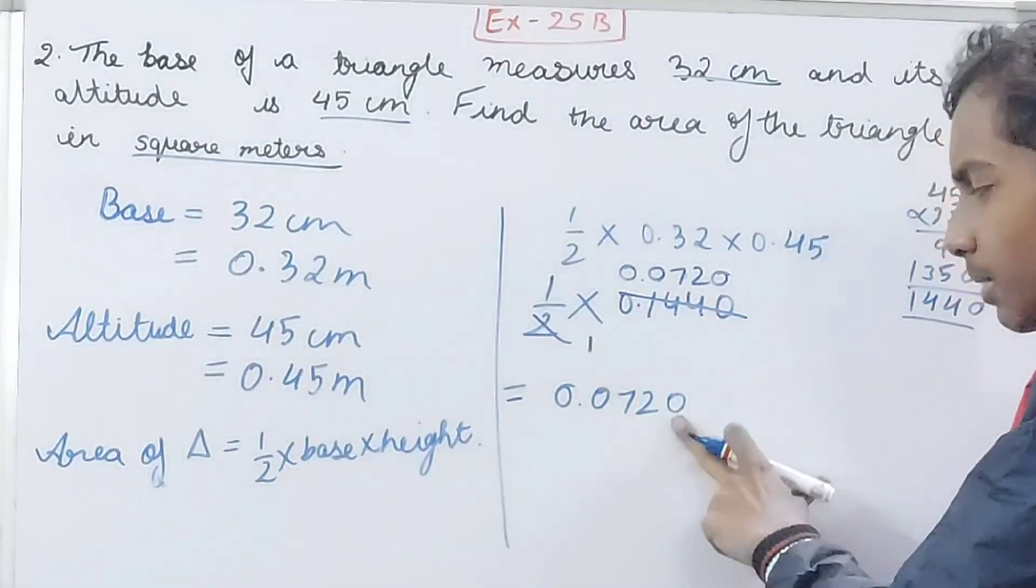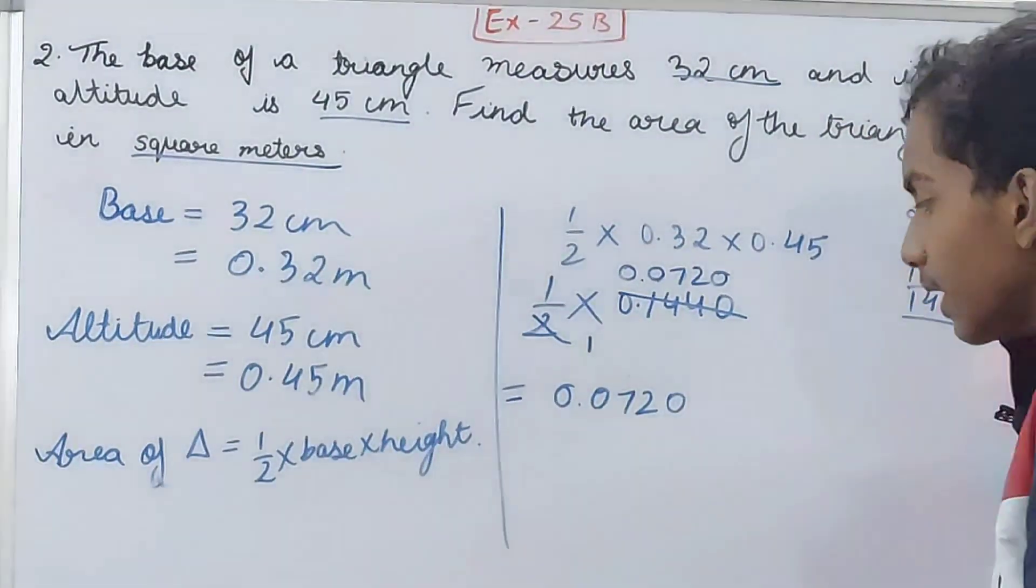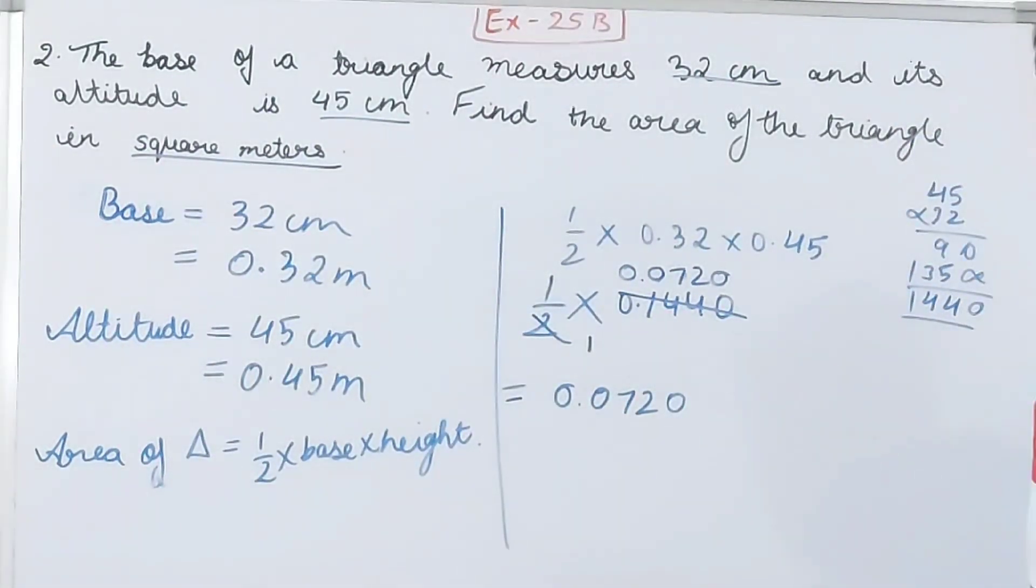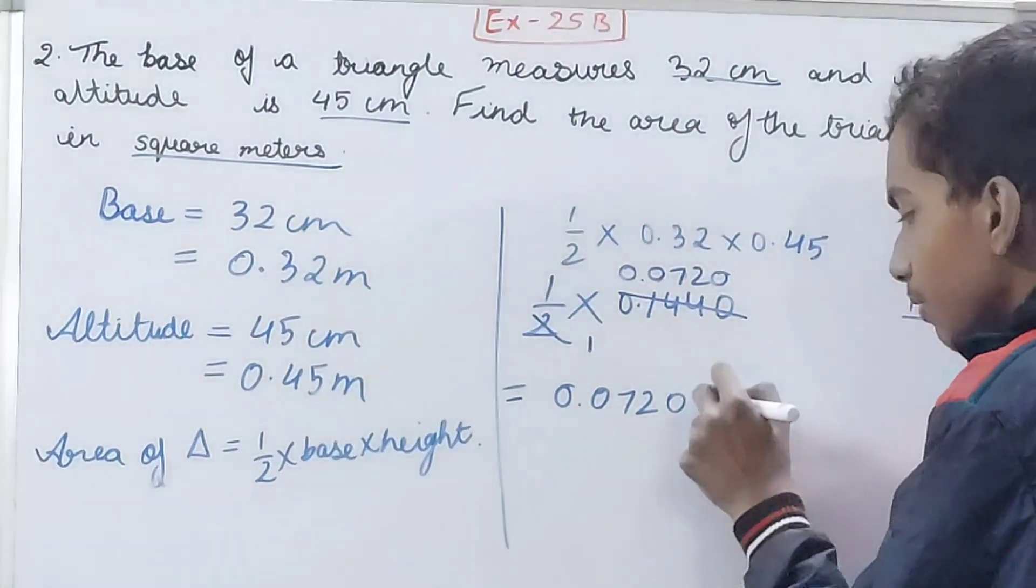The trailing zero can be eliminated if you want, as it doesn't have any value. So 0.072 or 0.0720, and the unit will be square meters. This is the area and the answer.